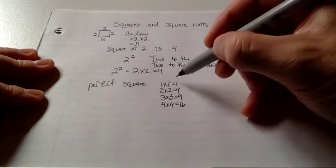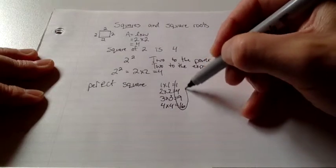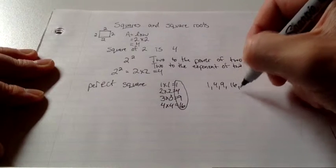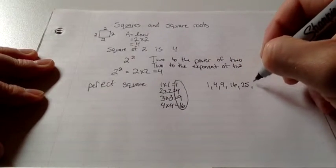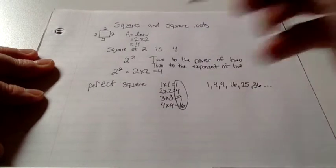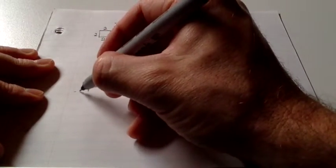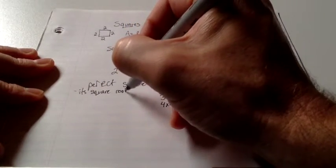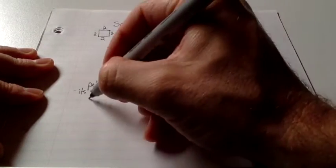So these numbers here are perfect squares. 1, 4, 9, 16, 25, 36, and onwards. It's a perfect square. It's square root is a whole number.